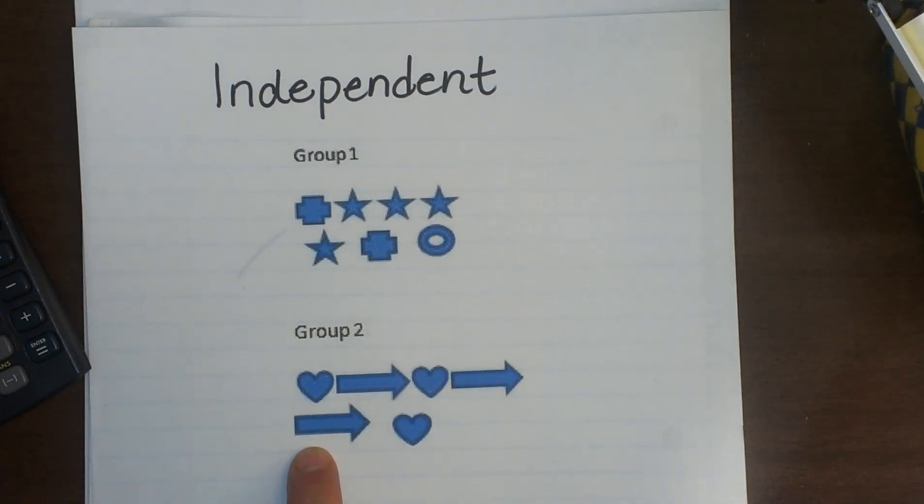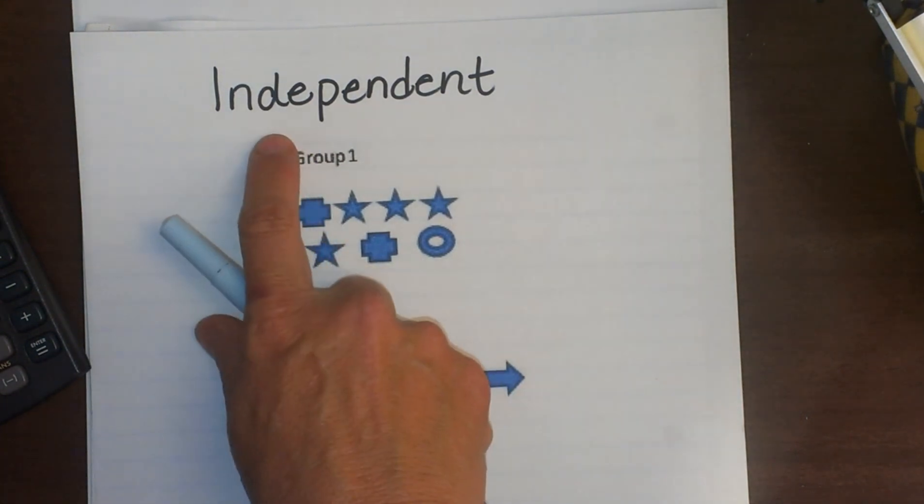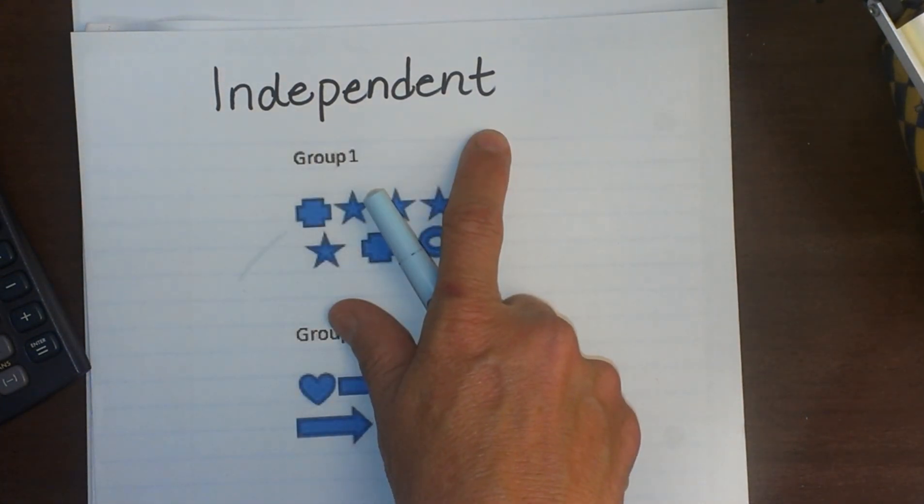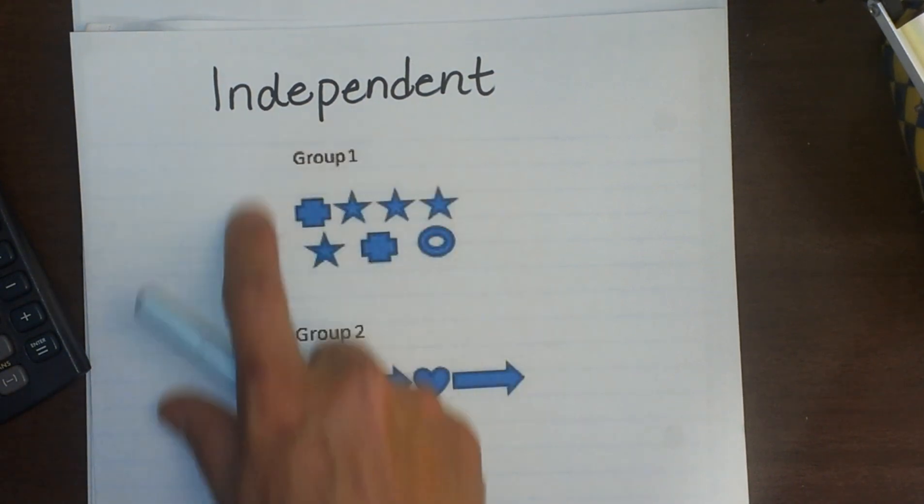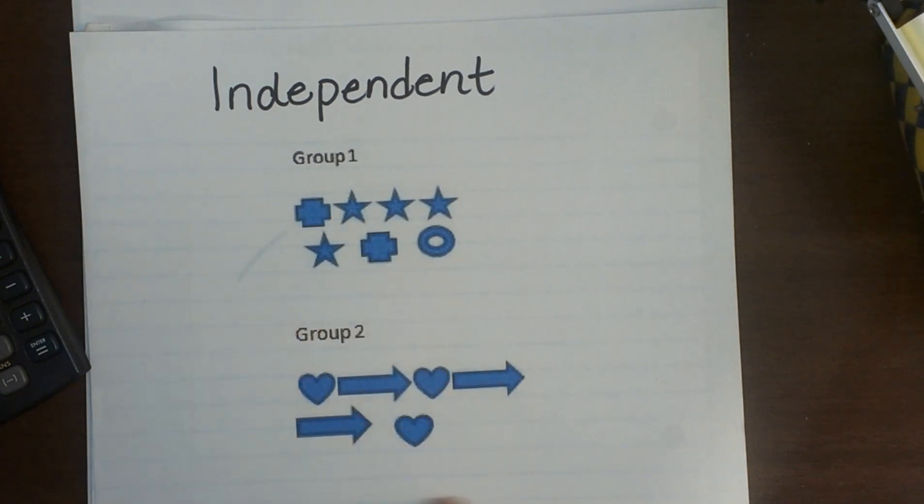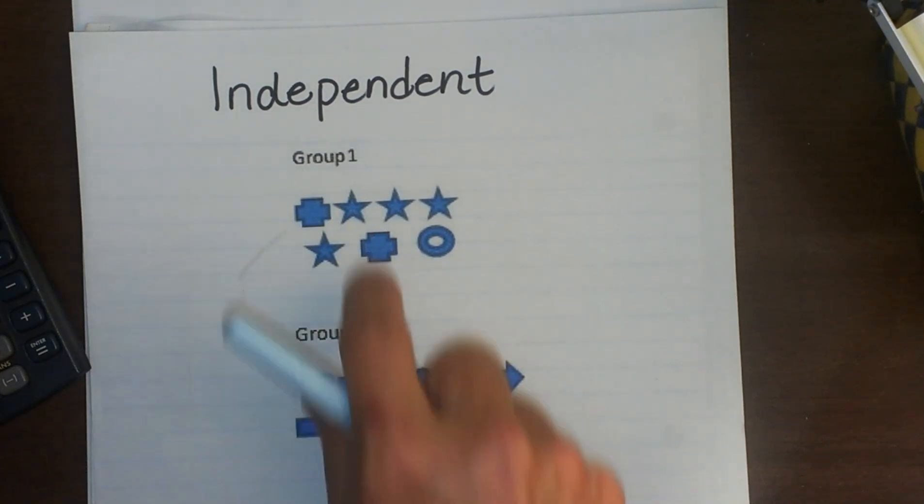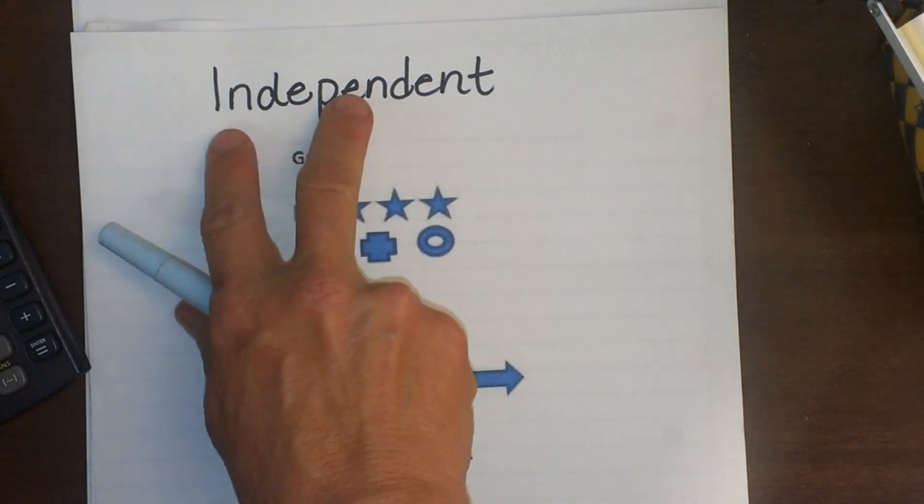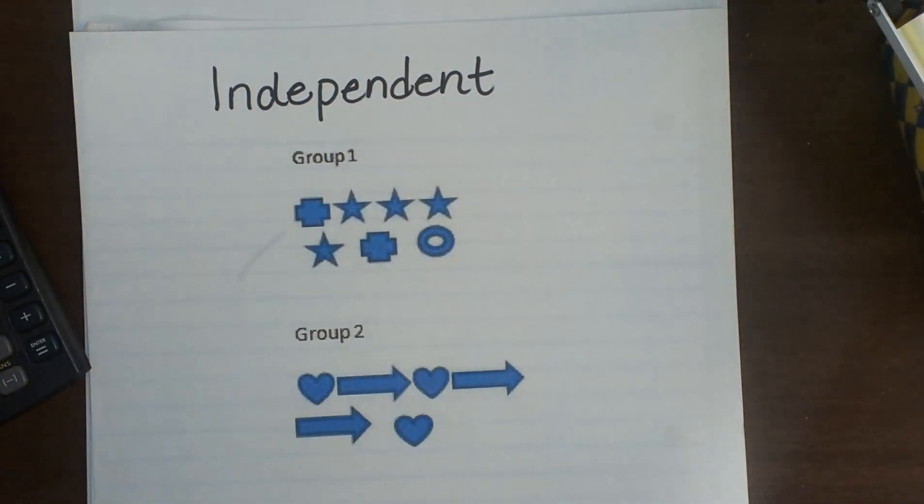We are going to look at the probability of two independent events. That means two events that do not affect each other. We are going to draw or choose one shape from group 1 and then we are going to choose one shape from group 2. Because they do not overlap at all, that is why these are considered independent events.